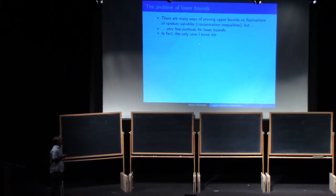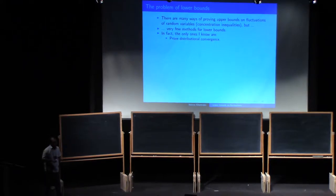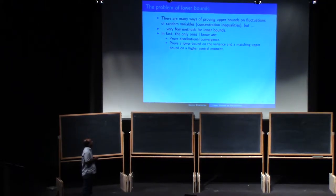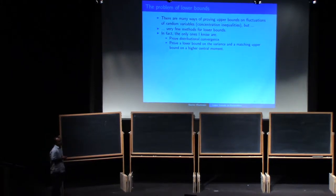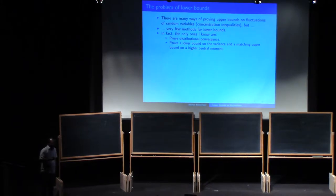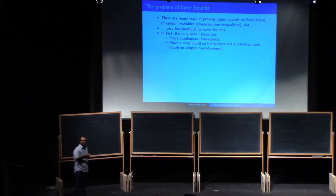When I was thinking about this, I figured that the only methods I know are the following. First, you can try to prove some kind of distributional convergence — a central limit theorem. That's great if you can do that; then you have upper and lower bounds matching. If you cannot do that, then you prove a lower bound on the variance. But you also have to prove a matching upper bound on some higher moment to apply the second-moment method, so just a lower bound on the variance doesn't tell you that the fluctuations are of that order.